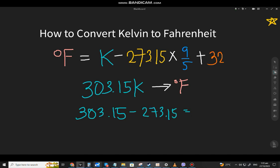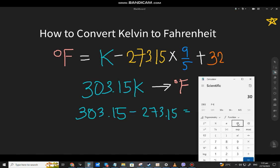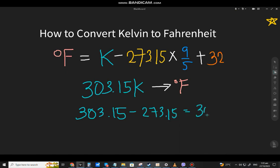So you use the calculator, so that will be faster. 303.15 minus 273.15 equals 30. Now that's 30, we will multiply it by 9, so 30 times 9, that will be 270.